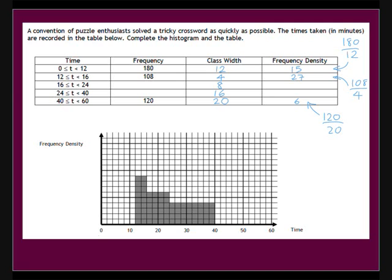Now we can use the formula for frequency density. For the first bar, 180 divided by 12 is 15. The calculations are shown for the three bars we have frequencies for.